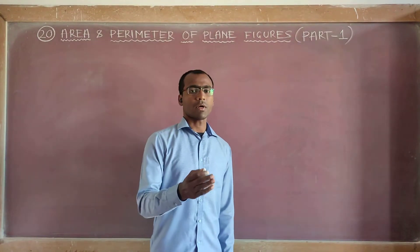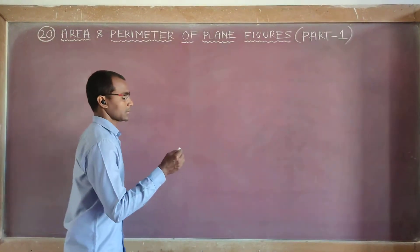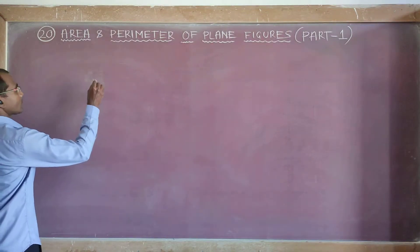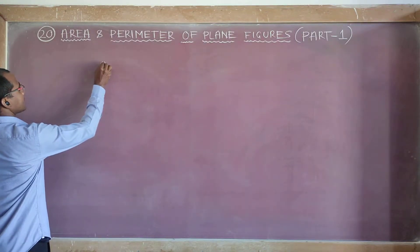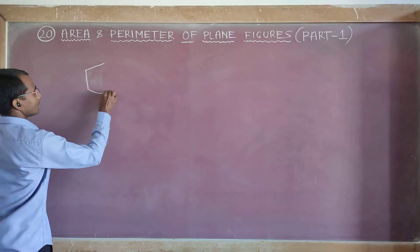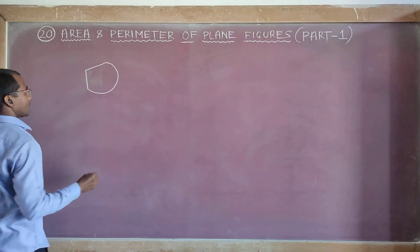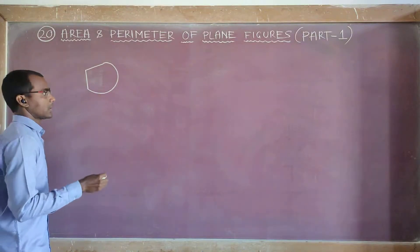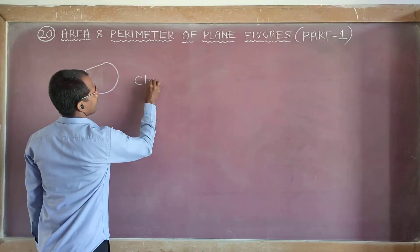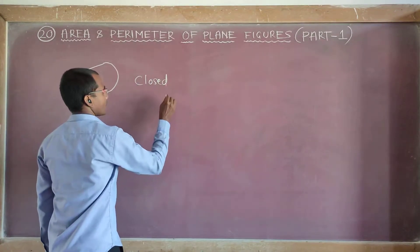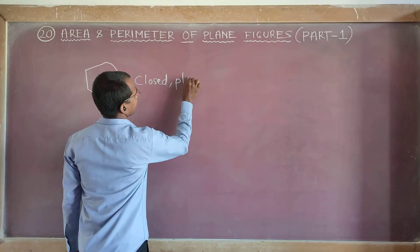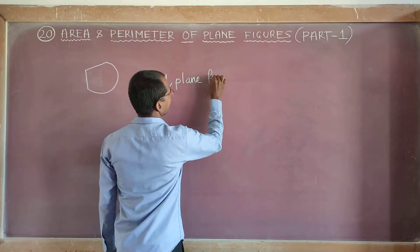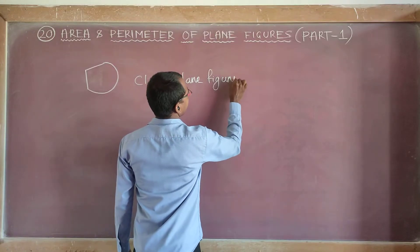First, let us understand what is area and what is perimeter. Suppose we have a closed figure — it is a closed plane figure, as you can see.